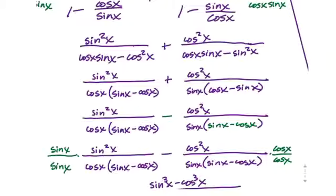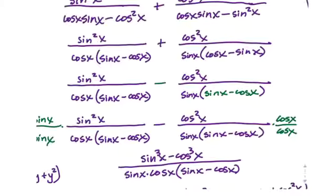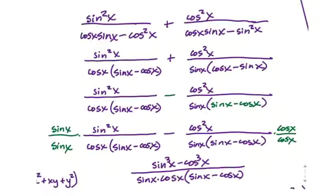The sine and cosine, then, we need to multiply each of those terms by what they're missing, because the LCM is sine times cosine times sine minus cosine. So the first one has the cosine and sine minus cosine. It's missing the sine factor, so we're going to multiply it by sine over sine, and the second one needs the cosine factor, so we'll multiply it by cosine over cosine. And again, notice I'm not writing it on this line. I'm doing that separately on this line below.